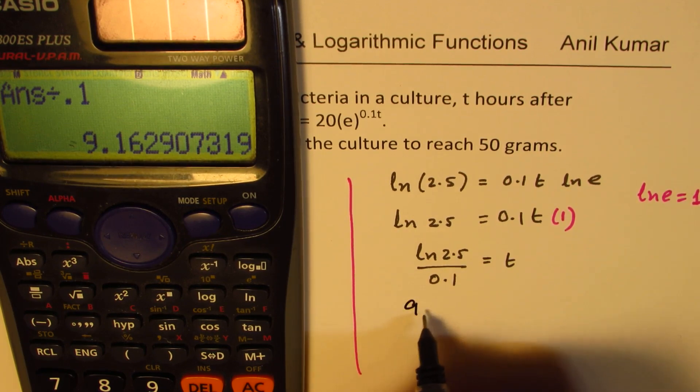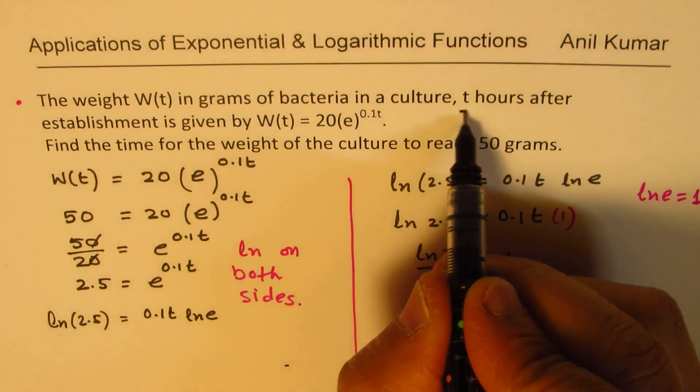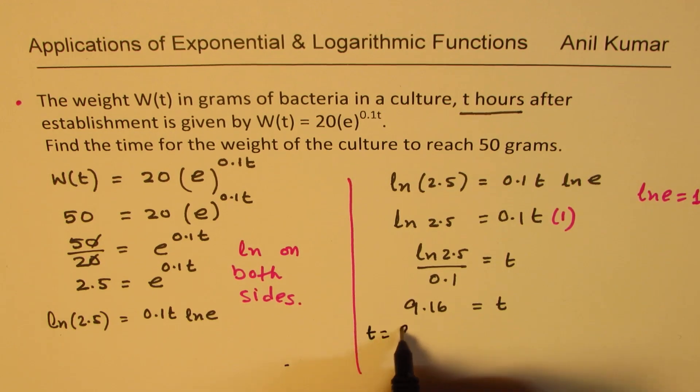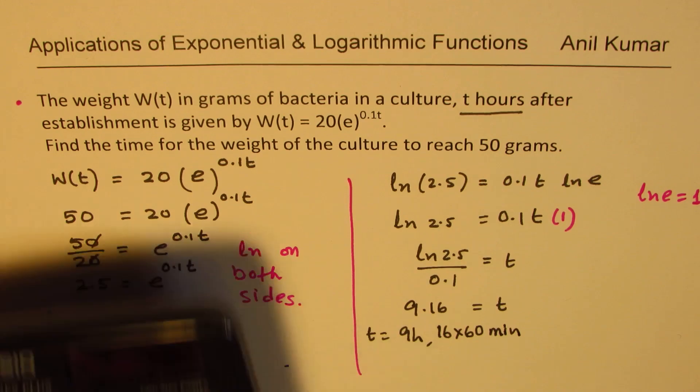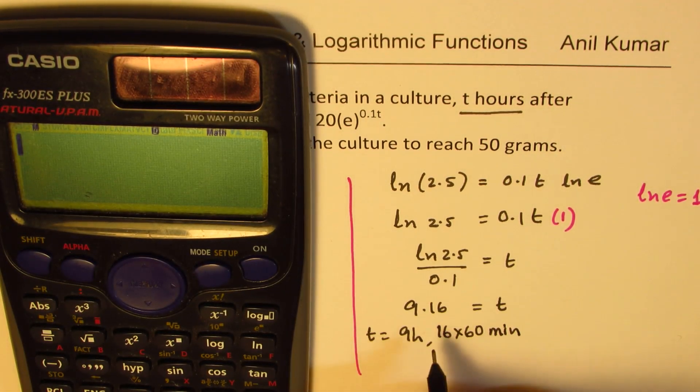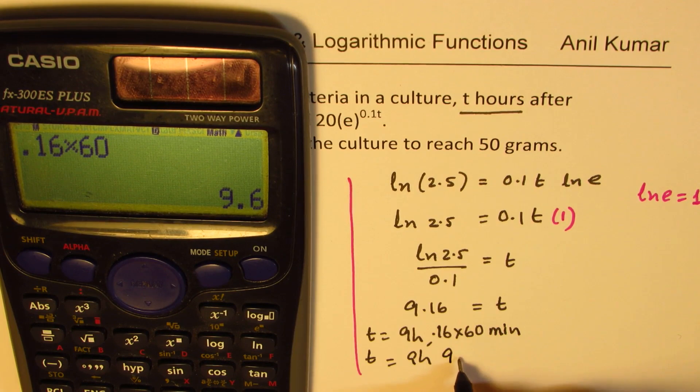Time is in hours. So we get t equals 9 hours, and how many minutes? We'll do 0.16 times 60 minutes. Write in hours and minutes. So 0.16 times 60 in decimals is 9.6. So we get t equals 9 hours and around 9 minutes. If more accuracy is required, you can convert that 0.6 to seconds also.